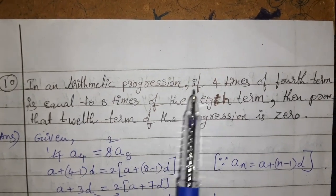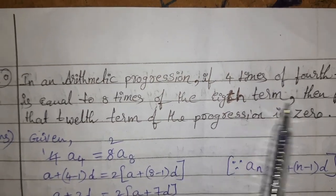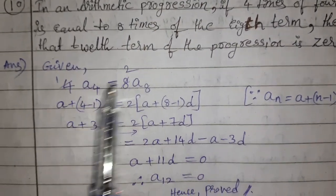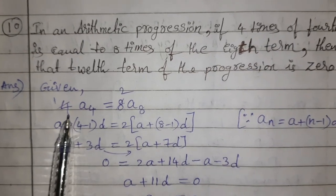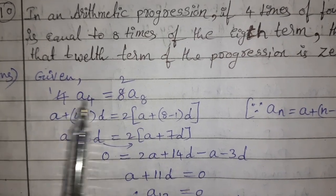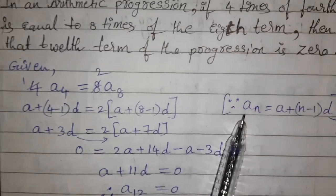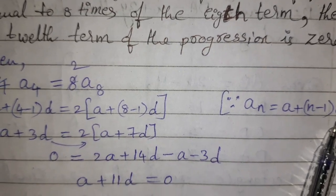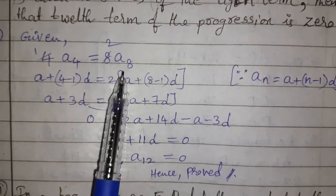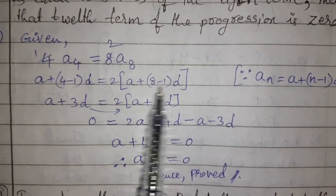Tenth question: in an AP, if 4 times the 4th term equals 8 times the 8th term, prove that the 12th term is 0. Given: 4·a₄ = 8·a₈, which simplifies to a₄ = 2a₈. Using Aₙ = a + (n−1)d: left side gives a + 3d, right side gives 2(a + 7d).